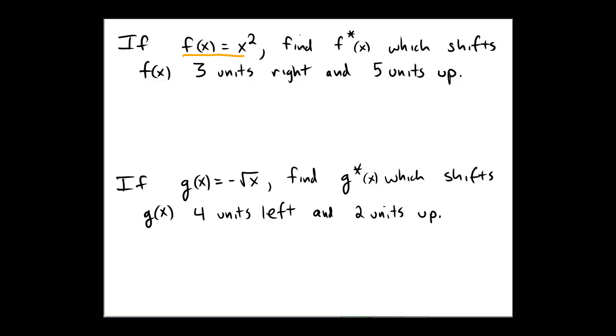Original function first is f of x equals x squared. We'll perform a right translation of 3 and an up translation of 5.